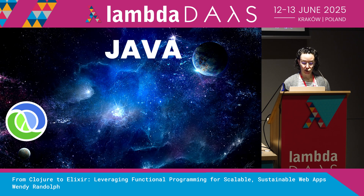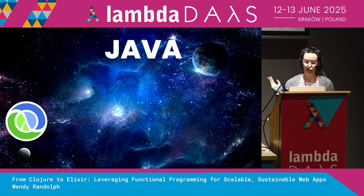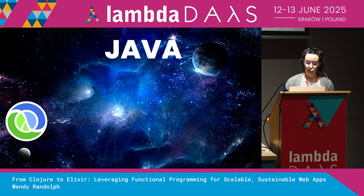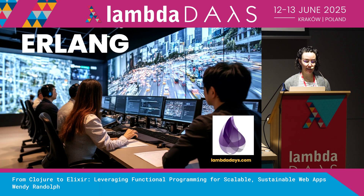Beyond the concurrency differences, Clojure is intentionally hosted — it compiles to and runs on the runtime of another language such as the JVM or other virtual machines. That means programs written in Clojure can leverage and interop with the libraries of the host language directly and efficiently. With Elixir, it runs on the BEAM and you can fully use Erlang's standard library, tools, and OTP infrastructure.